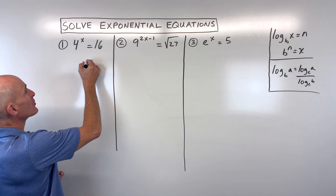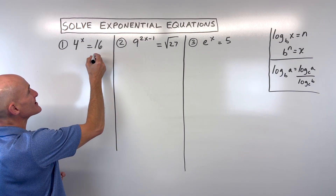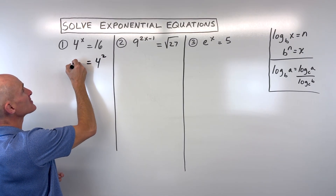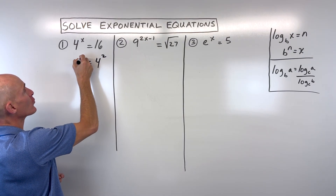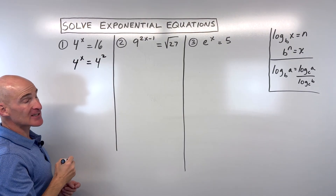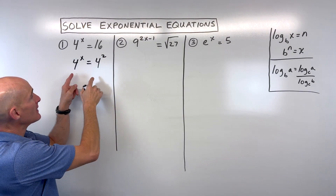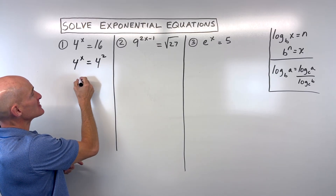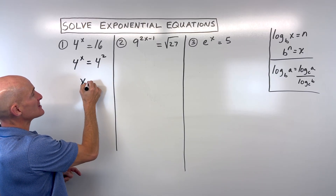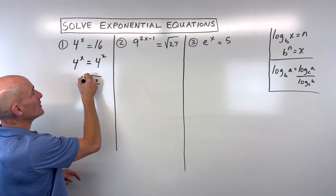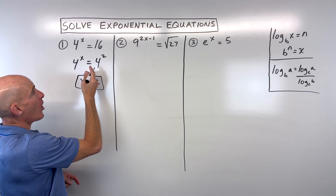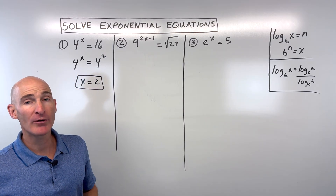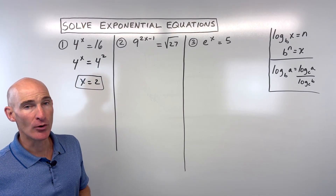then we can set the powers or the exponents equal to one another. For example, I recognize that 16 is 4 to the second power. On the left side, I have 4 to the x power. If these bases are the same, then the exponents have to be the same: x is equal to 2. That's often referred to as the one-to-one property of exponents.